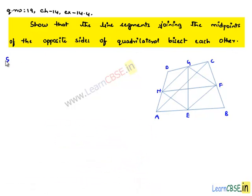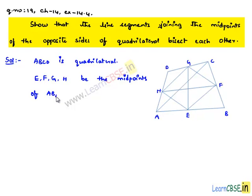Moving on to solution, let us consider a quadrilateral ABCD as shown in figure. Let E, F, G, H be the midpoints of sides AB, BC, CD and DA respectively.